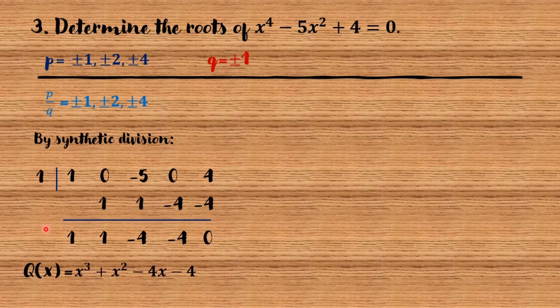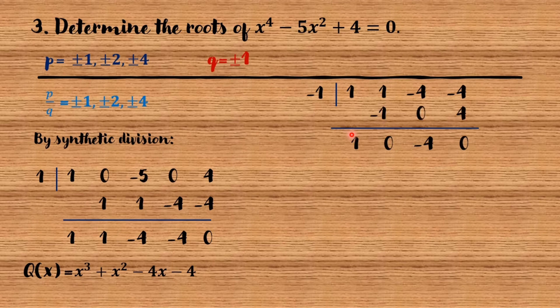To get the other roots, since q of x equals x cubed plus x squared minus 4x minus 4 is a third-degree polynomial, we can still use synthetic division. Write all the coefficients of q of x and try negative 1. Bring down 1. 1 times negative 1 equals negative 1. 1 plus negative 1 equals 0. 0 times negative 1 equals 0. Negative 4 plus 0 equals negative 4. Negative 4 times negative 1 equals 4. Negative 4 plus 4 equals 0. The remainder is 0, so negative 1 is a root of the given polynomial.